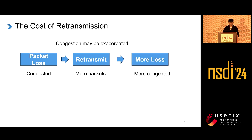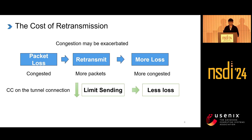However, retransmission will exacerbate congestion. When packet loss occurs, the network is usually congested. At this time, retransmitting packets may cause the network to become more congested, potentially leading to more packet loss. In our system, we use congestion control in the tunnel connection. Therefore, when retransmitting packets, packet sending will be restricted by congestion control, thereby reducing the retransmission rate.